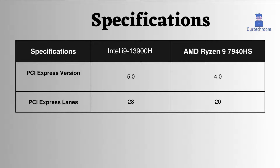However, this Intel holds certain advantages over the Ryzen 7940HS, thanks to its superior features such as more PCIe lanes and higher version support.